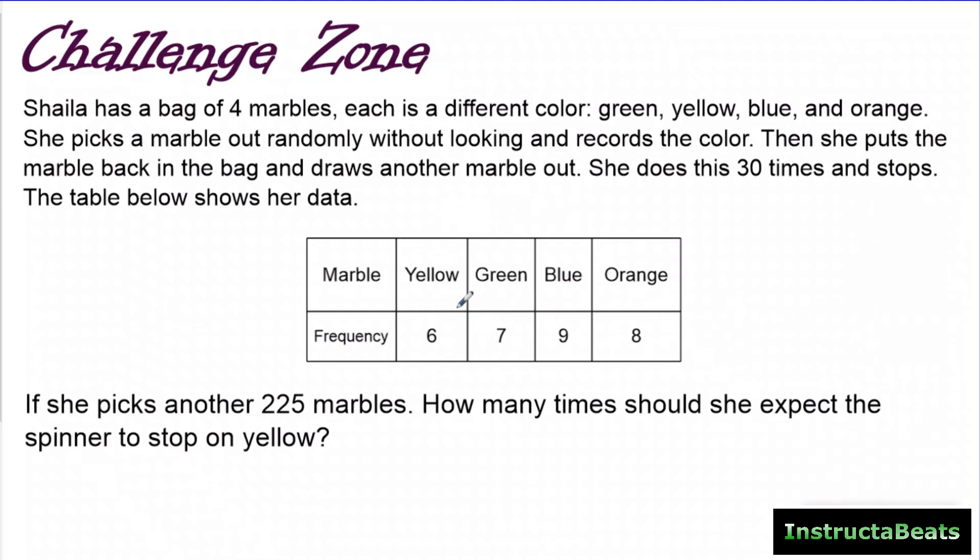The table below shows her data. So she did it 30 times, and she pulled out yellow with a frequency of six, green with a frequency of seven, blue nine times, which is what frequency means for a frequency chart, and orange eight times. If she picks another 225 marbles, so if she increases her sample size, how many times should she expect the spinner to stop on yellow? So this is asking us to use our experimental probability knowledge. So go ahead and pause it. Try to solve it if you can. If not, it's okay. We'll go over it together and push play when you're ready to check your work.